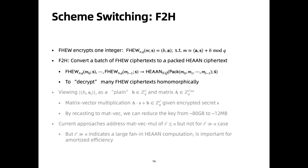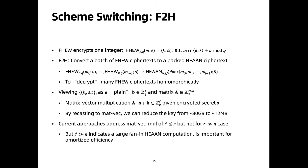We first introduce the basic idea of switching FHEW ciphertexts to valid HEAN ciphertexts. One FHEW cipher encrypts one integer, and its decryption formula requires computing the inner product of vectors. F2H converts a batch of FHEW ciphers to a packed HEAN cipher. To perform F2H, we need to homomorphically decrypt these FHEW ciphertexts. By rewriting the FHEW decryption formula, we can convert the computation as a matrix-vector multiplication given the encrypted secret vector S. However, current approaches for matrix-vector multiplication can only handle short matrices properly — that is, they assume the matrix has fewer rows than columns. But the opposite case indicates a large fan-in computation in HEAN, which is crucial to achieve good amortized efficiency.